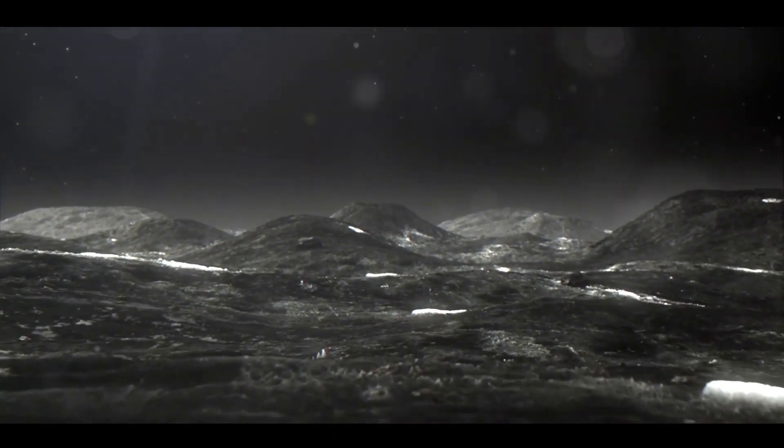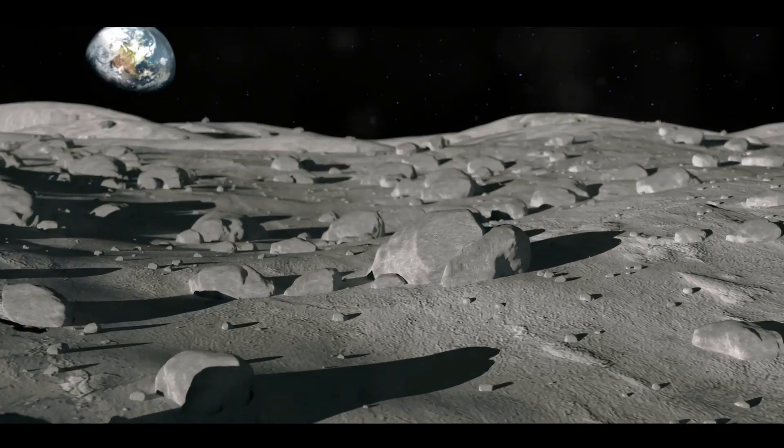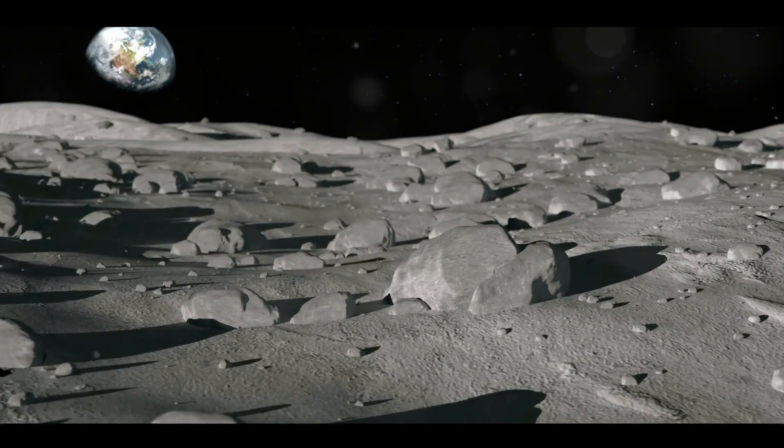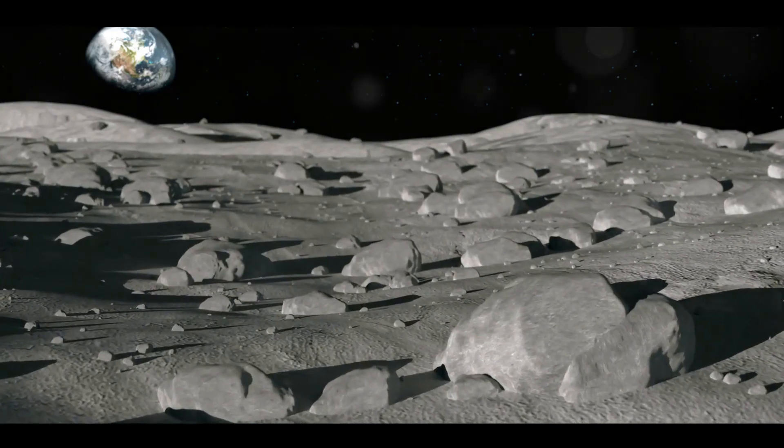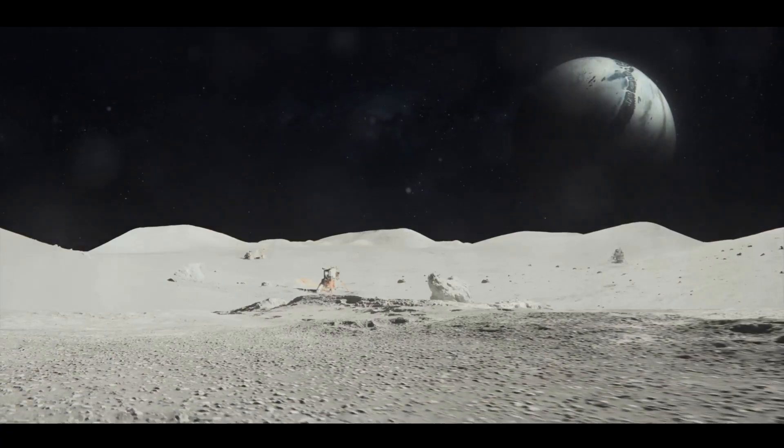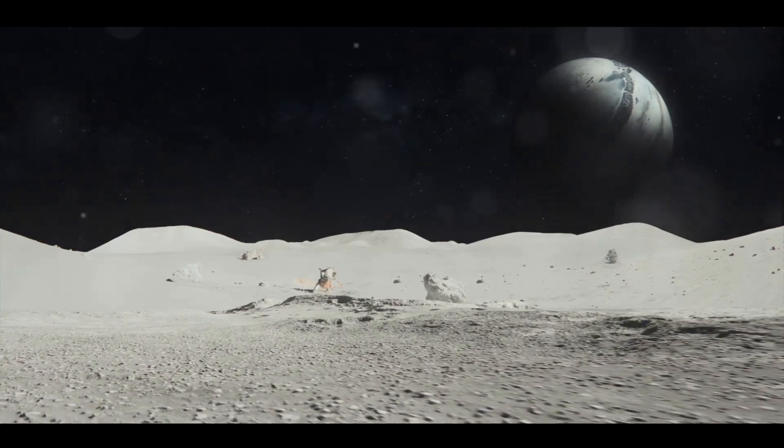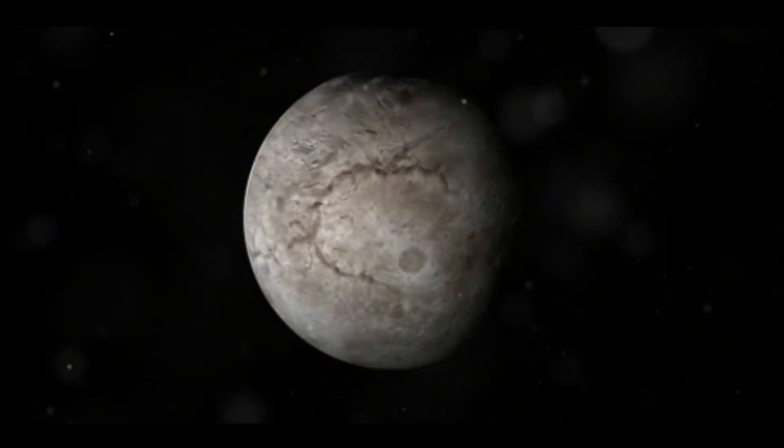Now don't let its diminutive classification fool you. Pluto is a fascinating world of ice and rock, spanning approximately 1,475 miles in diameter, which is about two-thirds the size of Earth's moon. Its surface is composed mainly of nitrogen ice, with traces of methane and carbon monoxide, giving it a distinct reddish-brown hue.